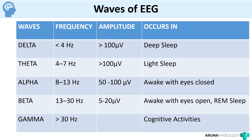In a nutshell, starting from the wave with the least frequency: delta waves seen in deep sleep have a frequency less than 4 Hz and amplitude of more than 100 microvolts; theta waves in light sleep have a frequency of 4 to 7 Hz and amplitude of more than 100; alpha waves are 8 to 13 Hz, amplitude 5 to 100, seen when awake with eyes closed; beta waves are 13 to 30 Hz, amplitude 5 to 20, seen awake with eyes open and in REM sleep; gamma oscillations occur when concentrating at very high frequency. This order follows increasing levels of concentration — from deep sleep to cognitive activity — which makes it easier to memorize.